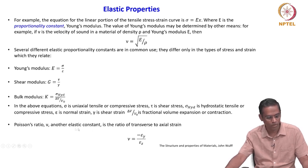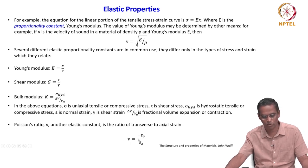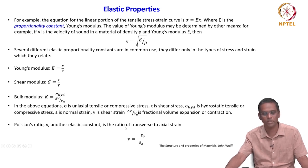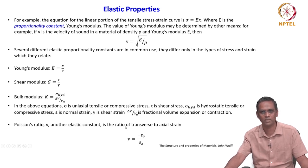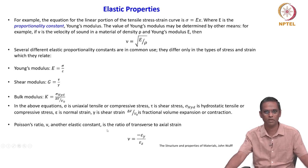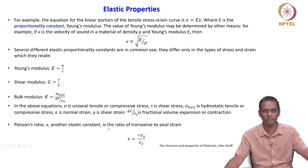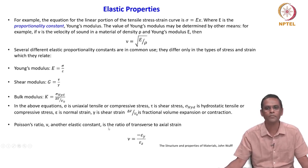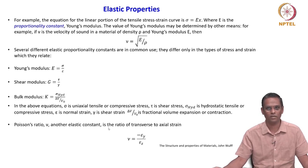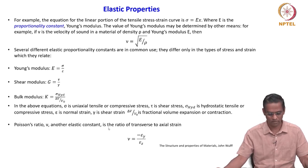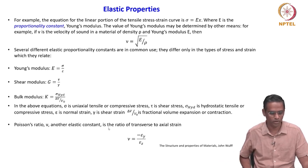Poisson's ratio mu, another elastic constant, is the ratio of transverse to axial strain: mu is equal to minus epsilon y divided by epsilon y. This equation we have used extensively in the principle of superposition, and from there we looked at the generalized Stokes law, which is very familiar.